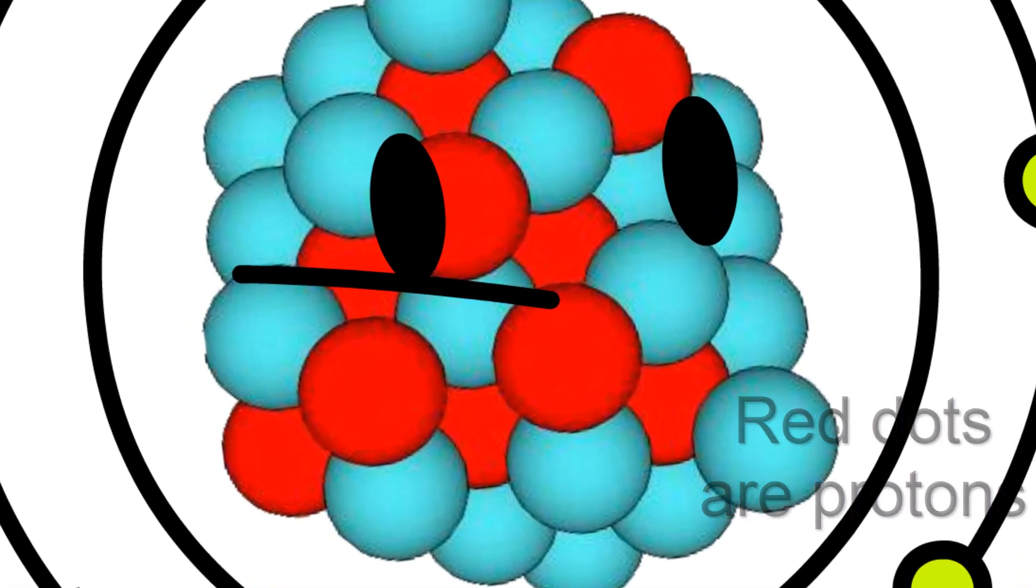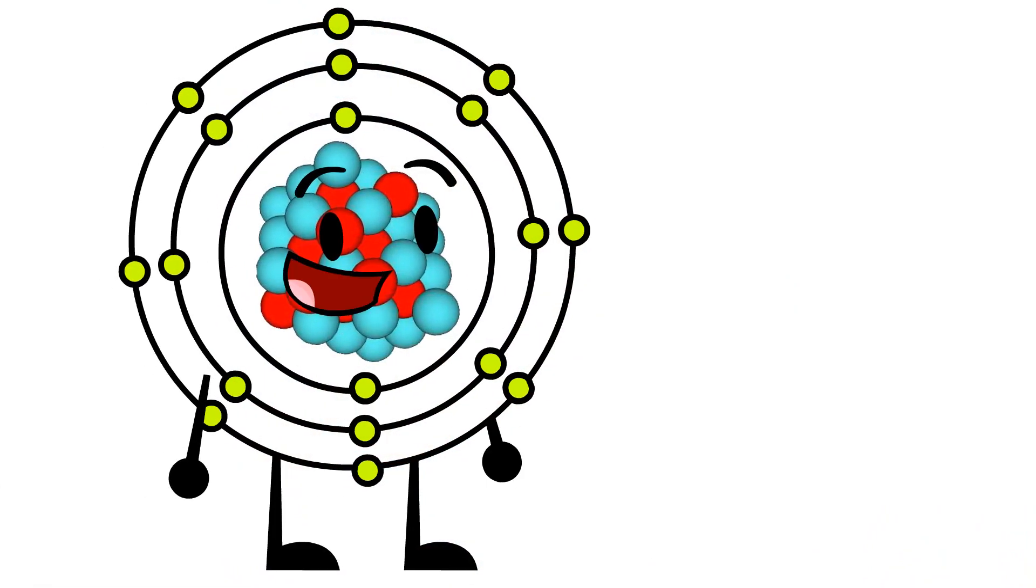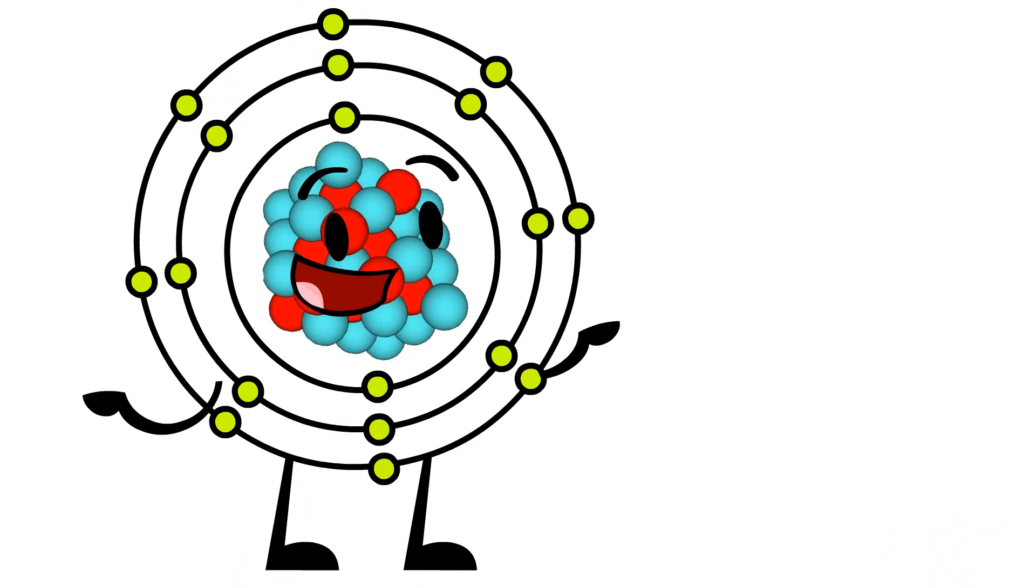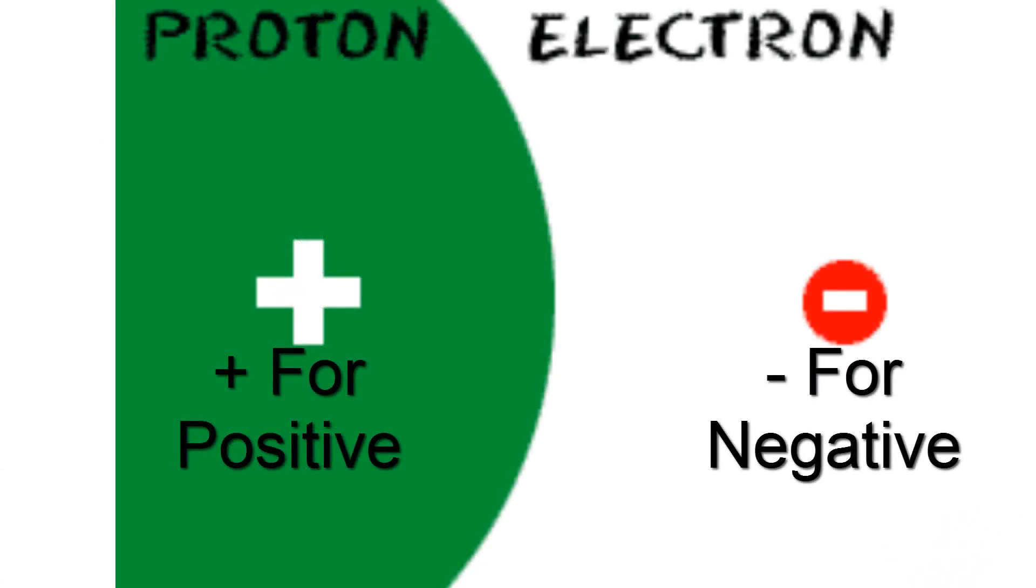The protons are located in the center of me, in my nucleus. Since there are 18 protons, there has to be 18 electrons because you have to balance out the charges. Protons are positive charged particles while electrons are negative charged particles.